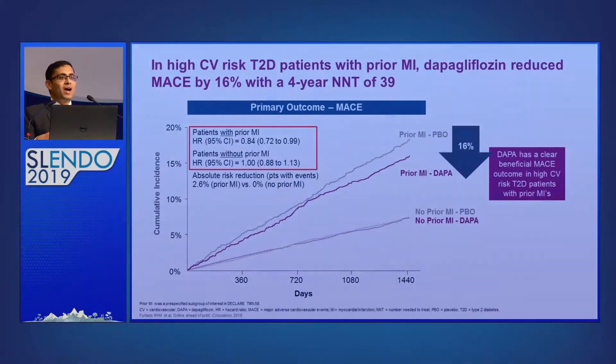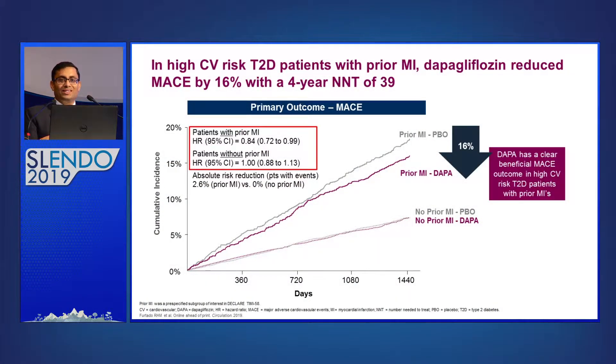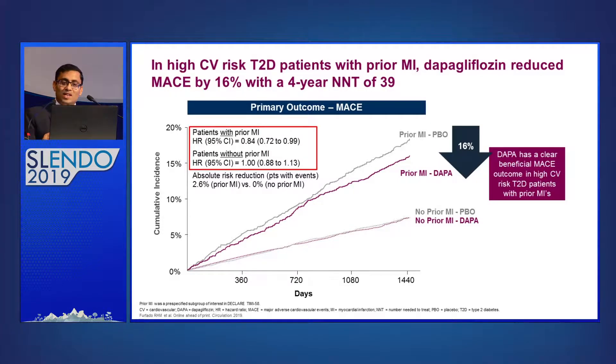Did DECLARE also include sicker patients? Yes — 40 percent were definitely sicker, and the results were comparable with empagliflozin, again confirming a class effect. If you choose a patient with prior cardiovascular disease, you can add any of these SGLT2 inhibitors. Even dapagliflozin showed a 16 percent reduced risk of three-point MACE, and the number needed to treat is 39, which is comparable to prior existing SGLT2 inhibitors.